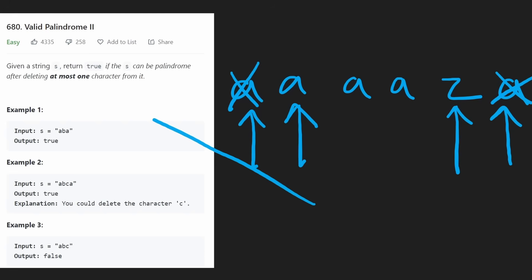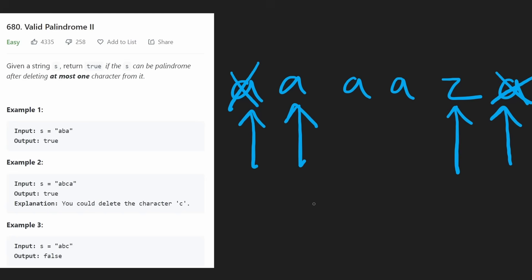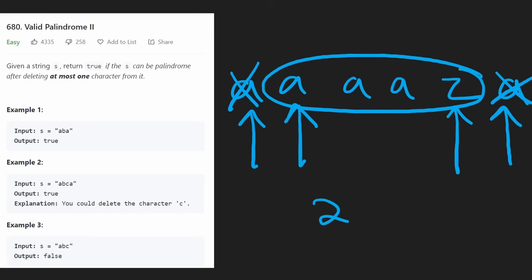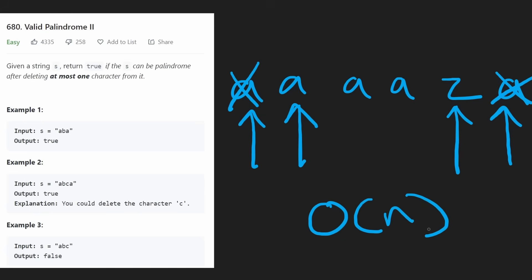In terms of time complexity, when we are deleting a character we only have two choices of which character to remove in the worst case — we're not going to have to consider removing every character. So we would potentially iterate through the entire string two times, giving a time complexity of 2N, which simplifies to O(N).